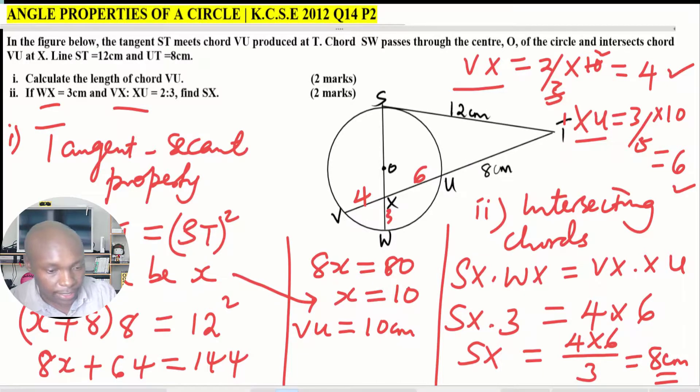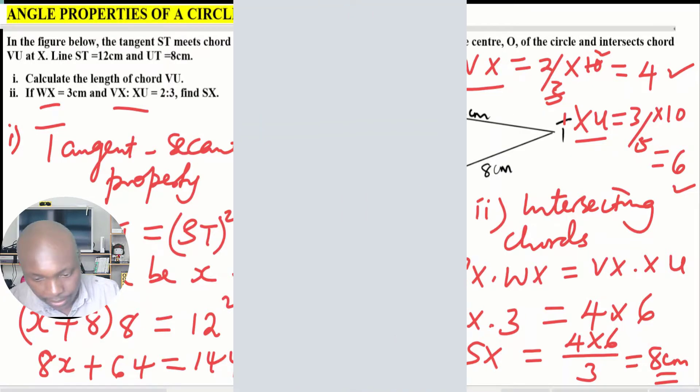That is simply how you're supposed to get that length SX. We've got the first part, VU is 10 centimeters, which assisted us to get the second part of the question, that is SX.